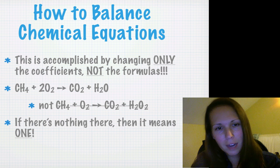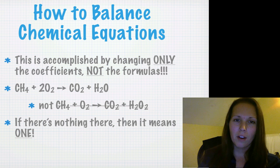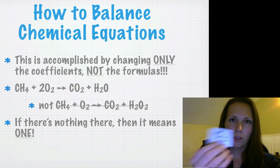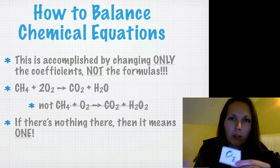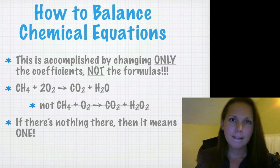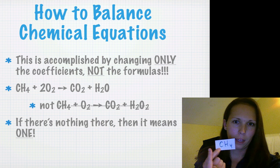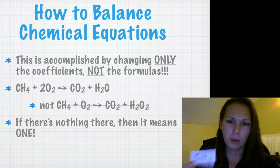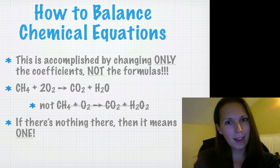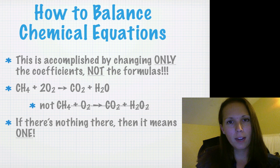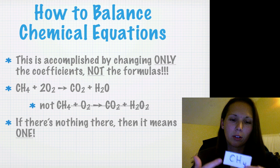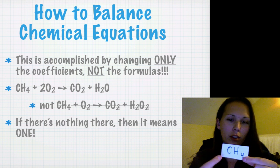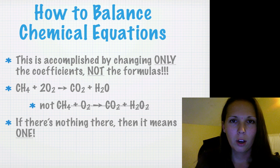Another side note: if there's nothing in front of a formula, it means one. So if you just see O2 in an equation, it means one O2 molecule. A coefficient is the number in front of something that tells you how many of that something you have. So if it says 4x in algebra, there are four x's. If we think of CH4 as an x, then there's just one - one coefficient means one CH4, which is methane.